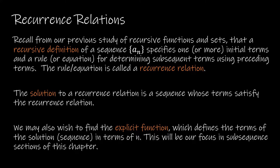We have a recursive definition, and the recursive definition has two parts. The recursive definition in this case is going to define a sequence rather than a function or a set. It's going to specify one or more initial terms — this is the first part, which we called the basis — and a rule or equation for determining subsequent terms using preceding terms. That rule is called the recurrence relation.